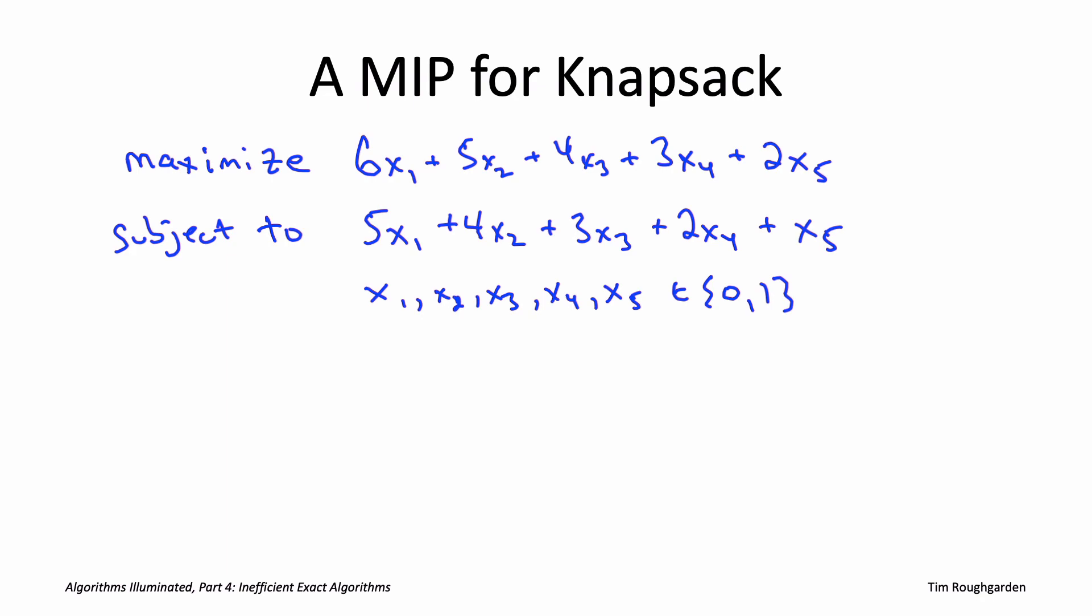For example, if we wanted to know the answer to this 5-item instance, we could use a leading commercial MIP solver like Gurobi Optimizer.